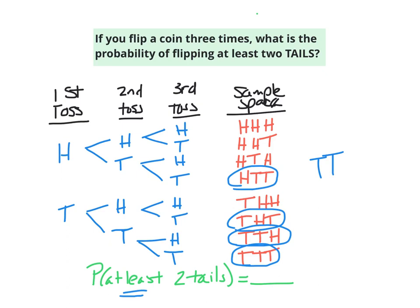The number of outcomes with at least two tails is one, two, three, four — that's four outcomes out of a possible eight different outcomes. So the probability would be four-eighths, which simplifies to one half.